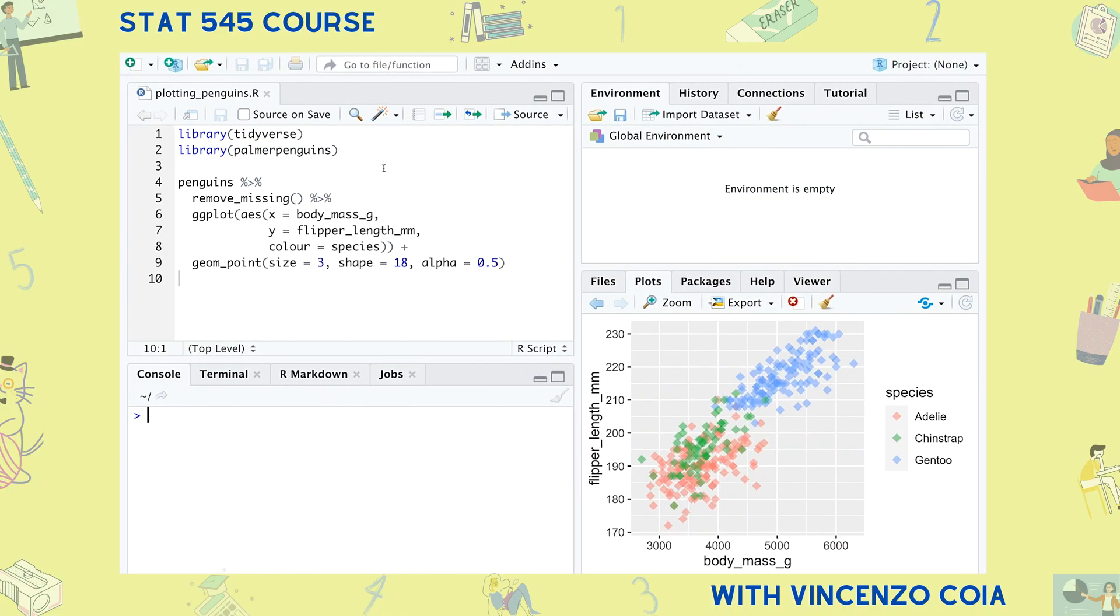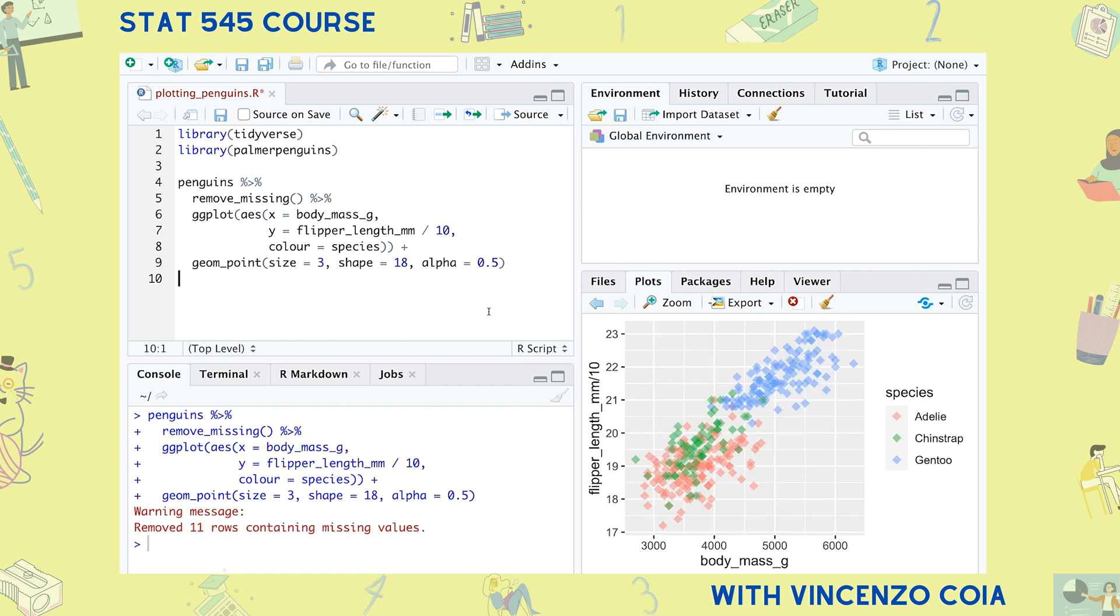For number four, we have a pro tip for you: make new variables on the fly. When you're specifying an aesthetic mapping, you don't always have to refer to columns that are present in your data. Instead, you can make new ones from existing columns. Let's start with an easy example and convert flipper length to centimeters. To do this, all we need to do is divide flipper length by 10. Here, it's as if a new column has been created in your data that is the old flipper length divided by 10.